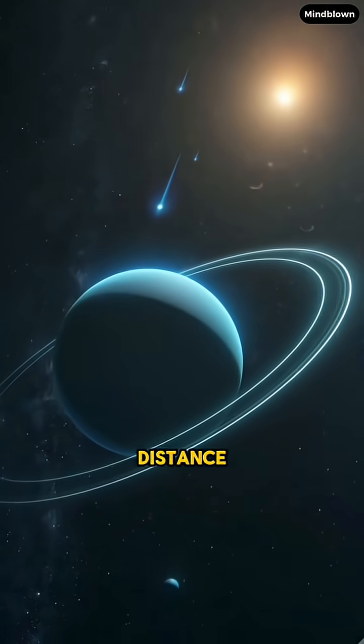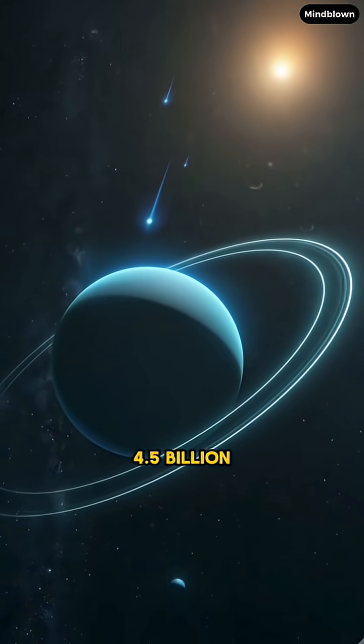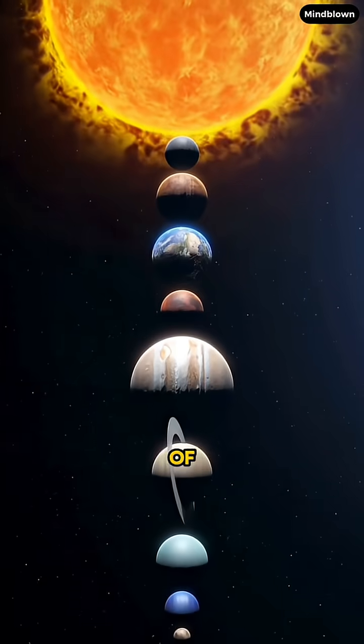For example, the distance from the sun to Neptune is 4.5 billion kilometers, but that's not the end of our solar system.